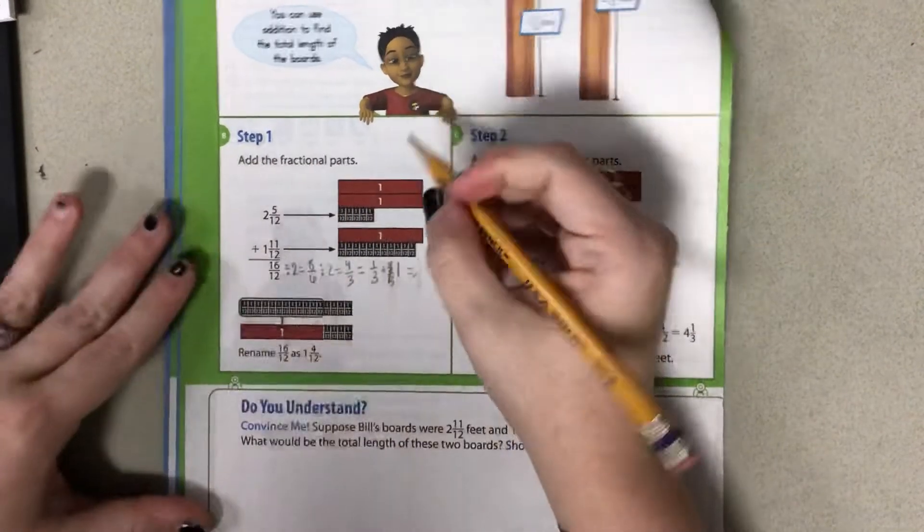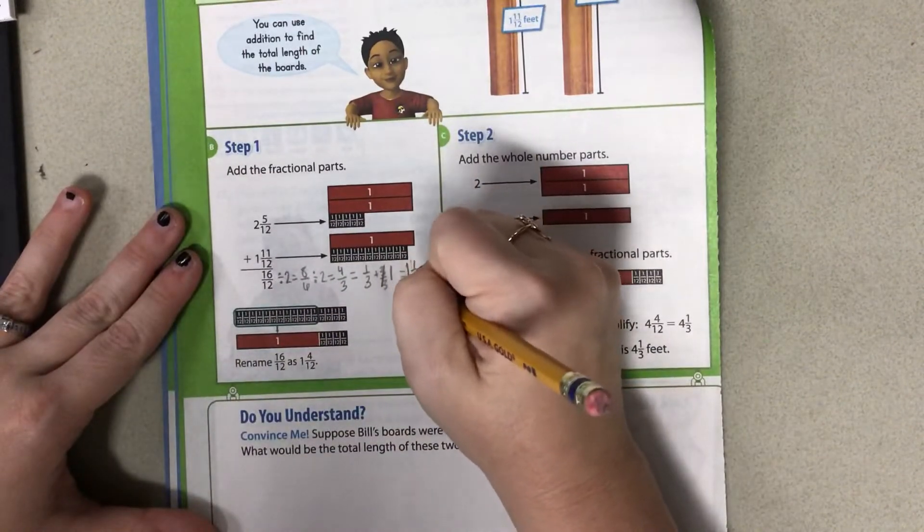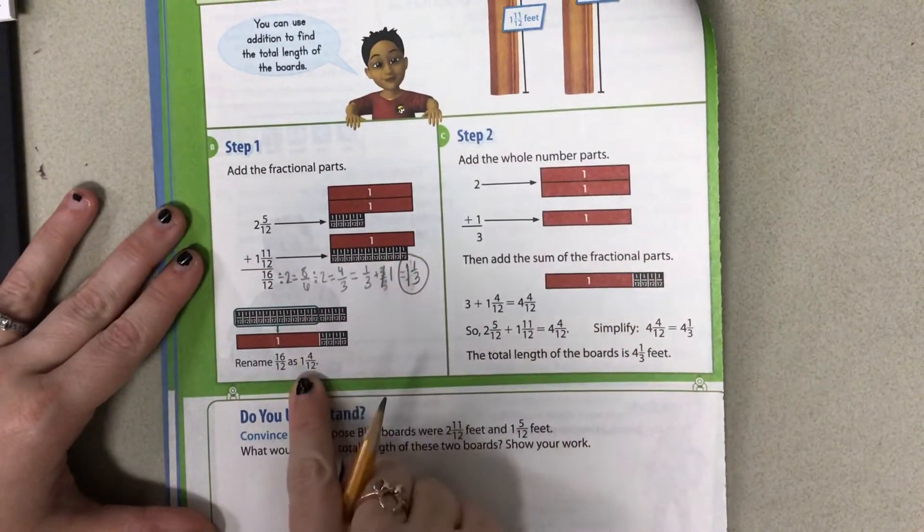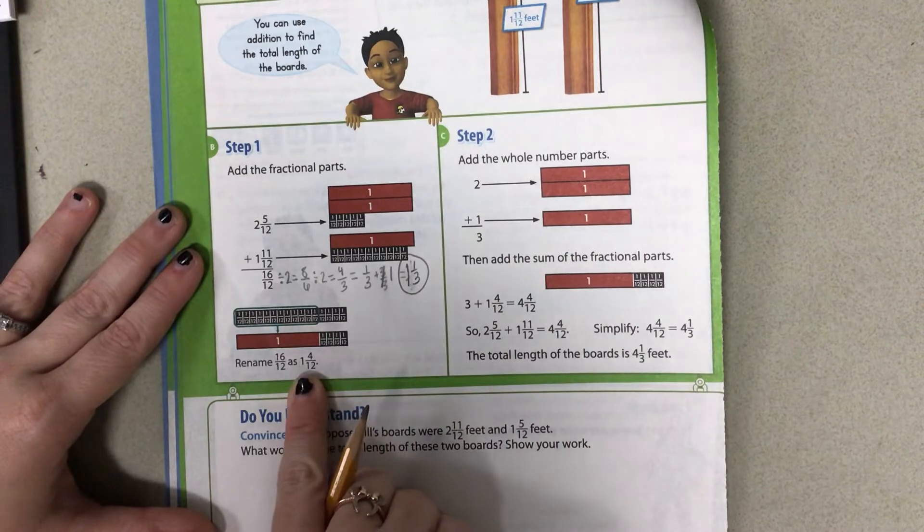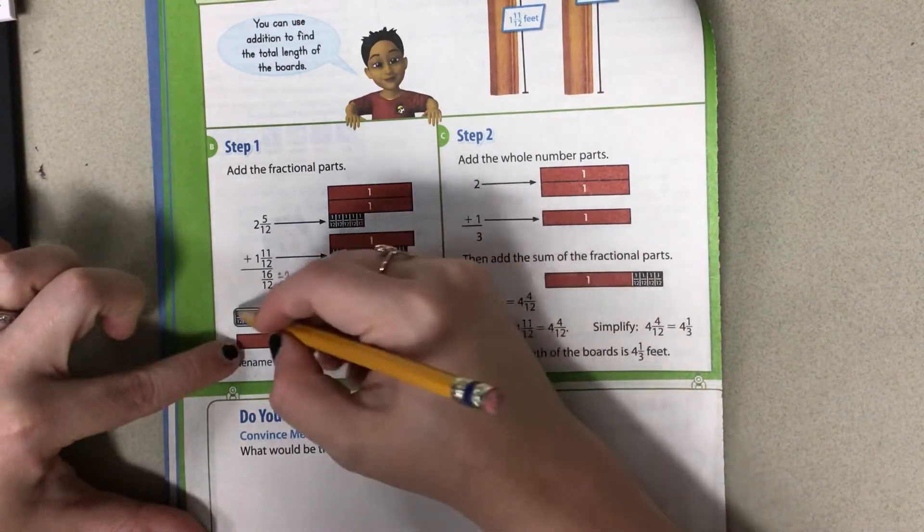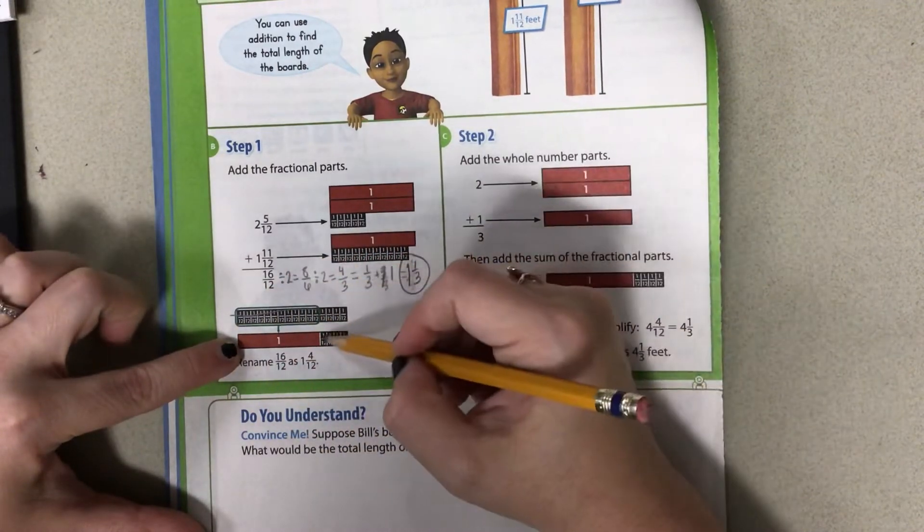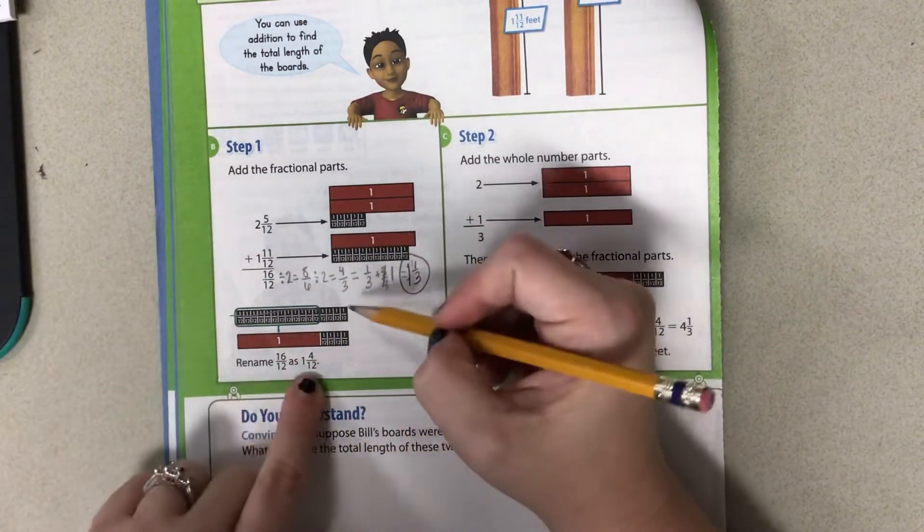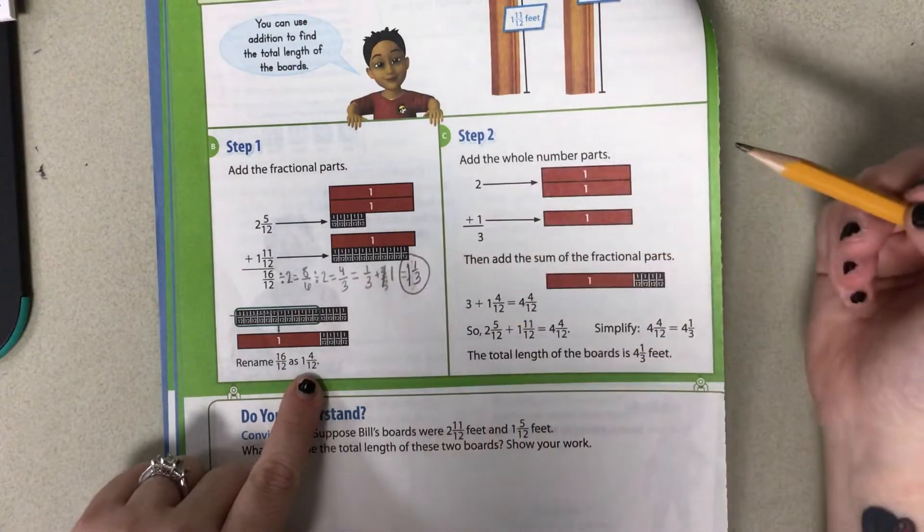Oops, I wrote that incorrectly. I apologize. 1 and 1 third. So they wrote 1 and 4 twelfths here, which works also, because as you can see, they compared it to the 1. So they took out 12 twelfths and that left them with 4 twelfths. I just took that 4 twelfths and went ahead and simplified it.